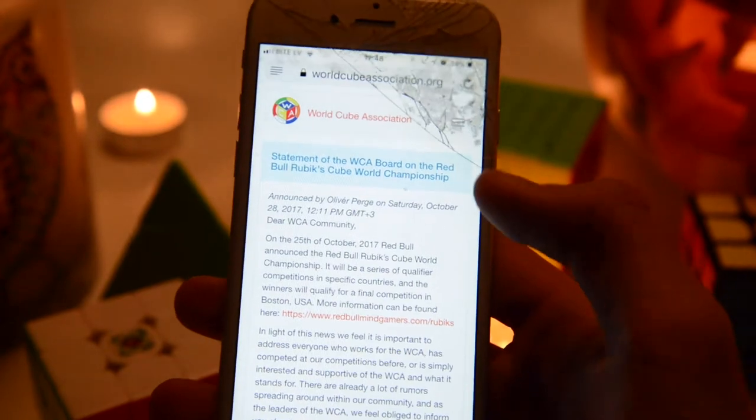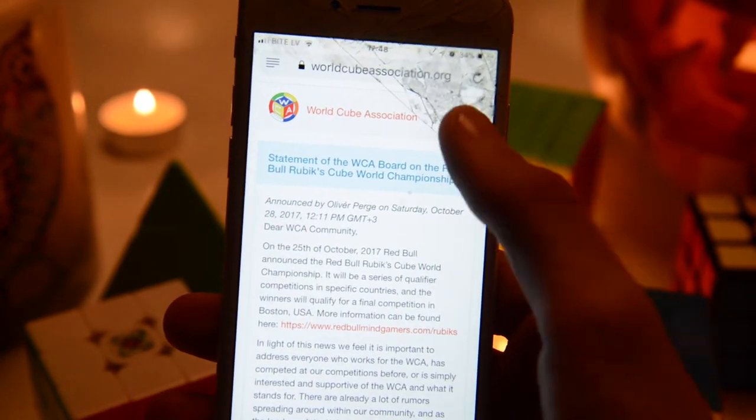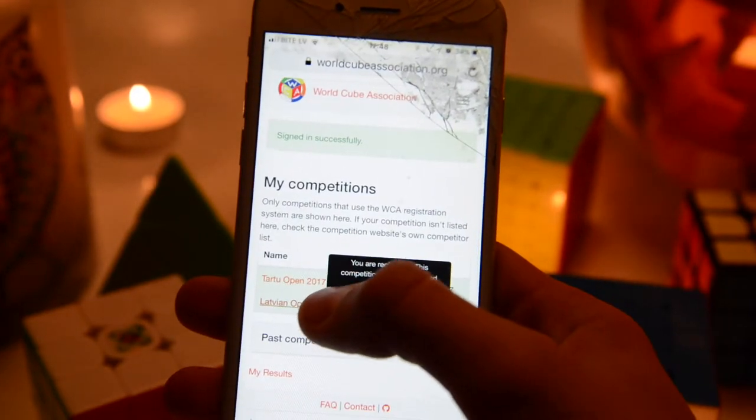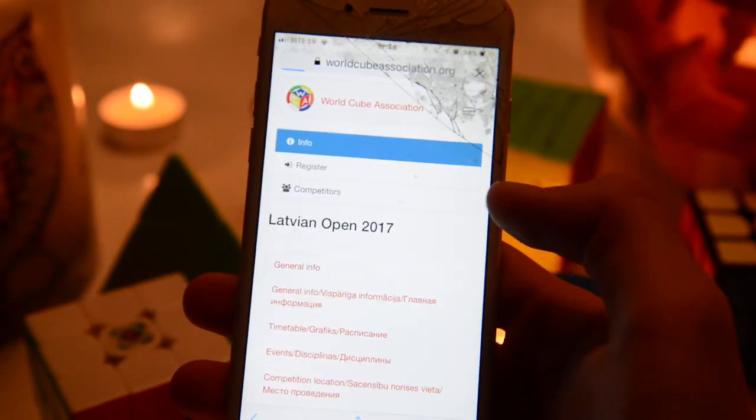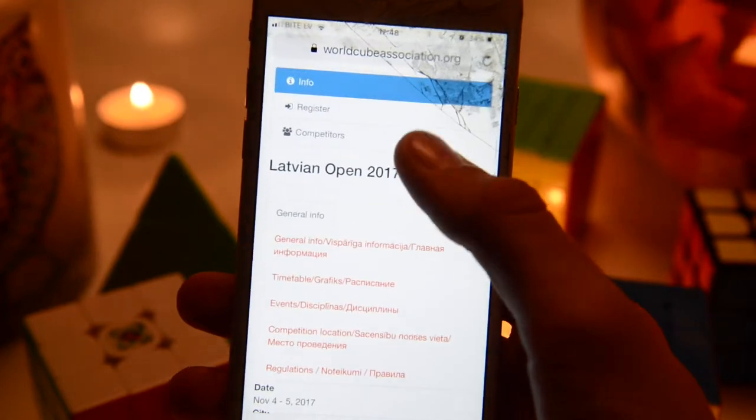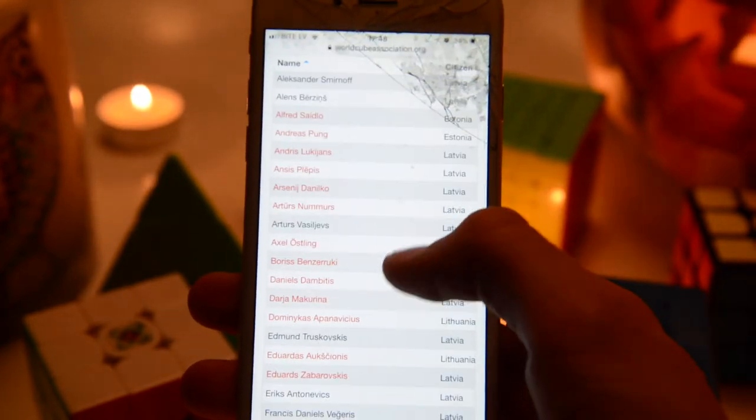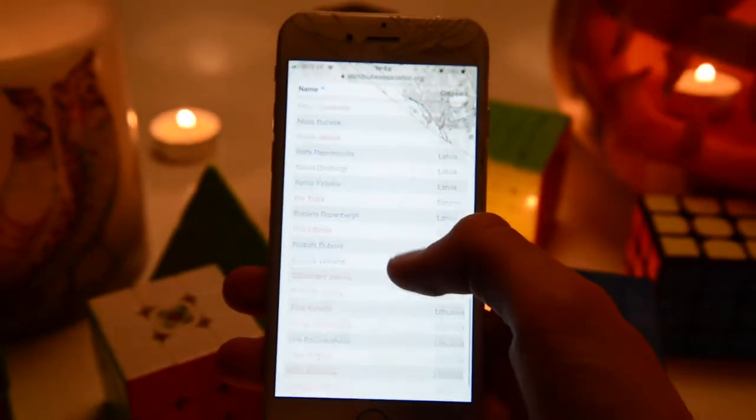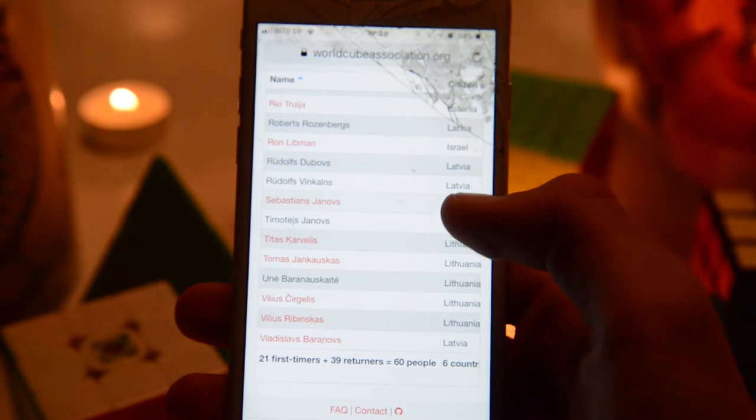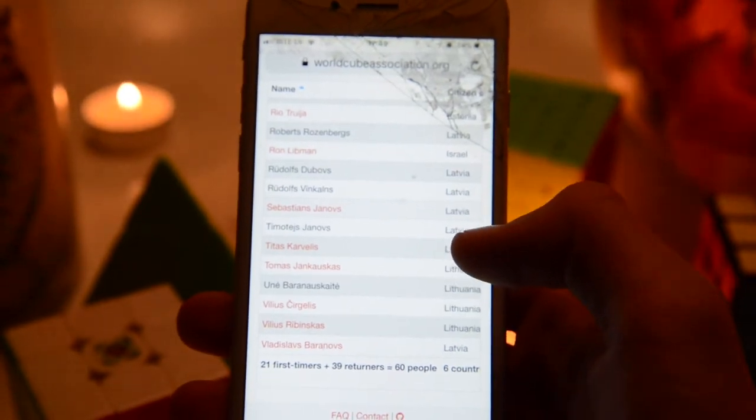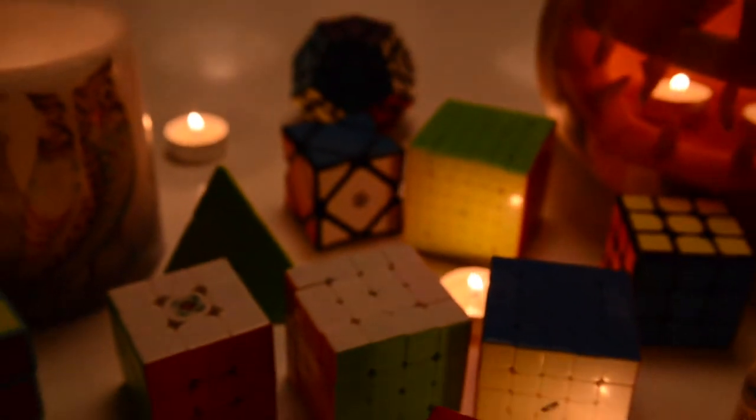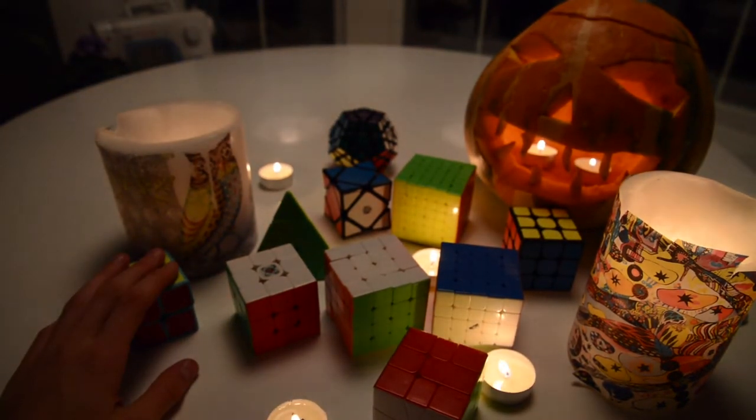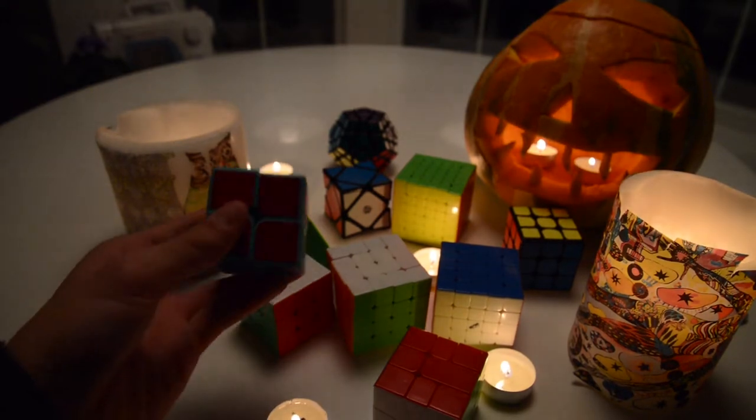To register for the competition, go to worldcubeassociation.org, click on competitions, and find Latvian Open. As you can see there's 58 people registered, and that's a lot of people because last Latvian Open there were only like 28 people. The count has doubled over the past year.